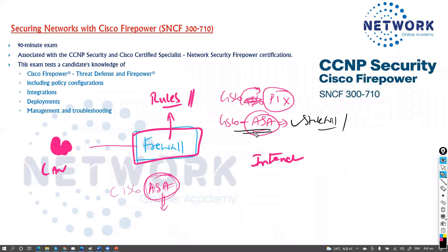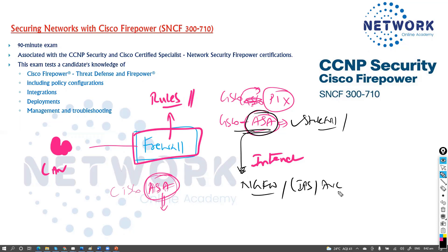The Cisco ASA handles the general firewall job, but in today's market we use next generation firewalls. These next generation firewalls have built-in IPS to detect malicious traffic and application visibility, where you can configure rules to deny traffic based on an application — for example, blocking Facebook or social media sites. They also support VPNs and many other next generation features.